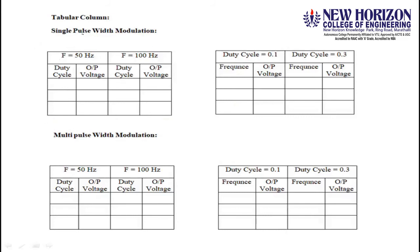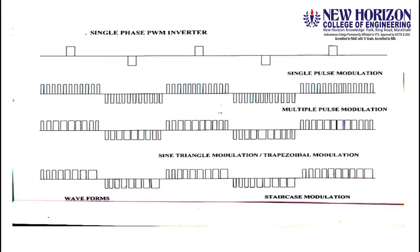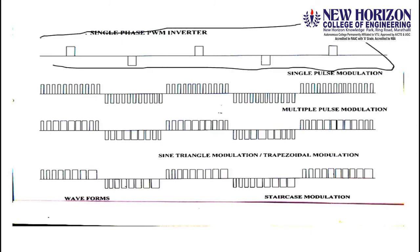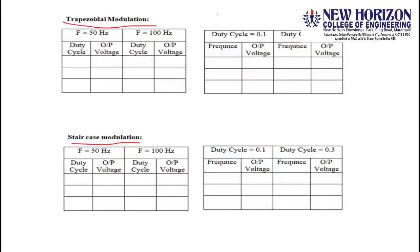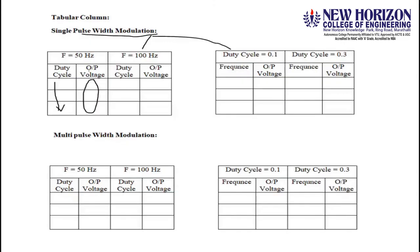For each PWM type, there are two tabular columns — one for constant frequency and one for constant duty cycle. The output voltage is measured using the multimeter and the pulse waveforms are observed on the CRO. The readings are recorded in the respective tabular columns.